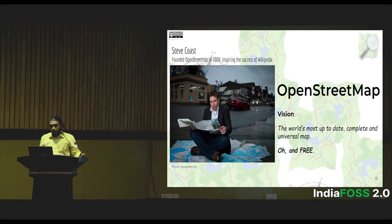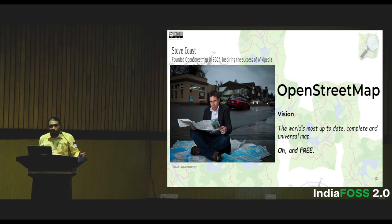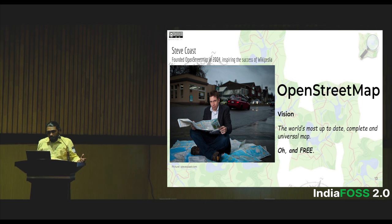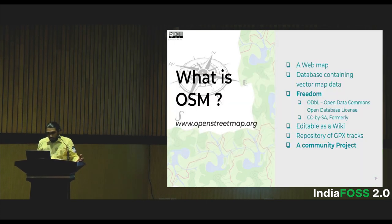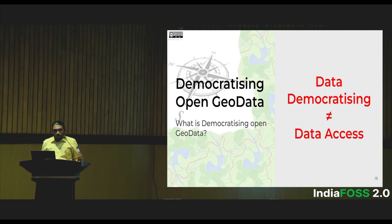The biggest open data map project is OpenStreetMap. You may all know Google Maps — OpenStreetMap is like an editable, community-driven version where anyone can edit the maps. It is a web map, it's free, you can download the data and use it. It is also a community project.